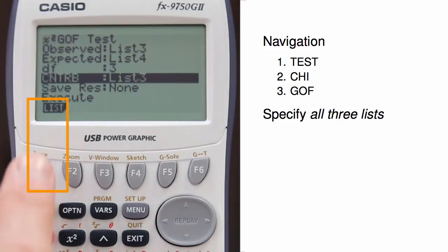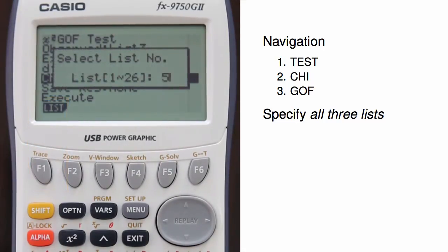Finally, we also specify a list where the contribution to the test statistic will be reported. I'll use list 5.